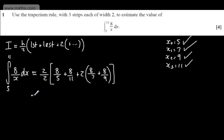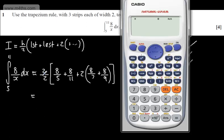This is approximately equal to, going straight through the calculator, 1 times 8 over 5 plus 8 over 11.